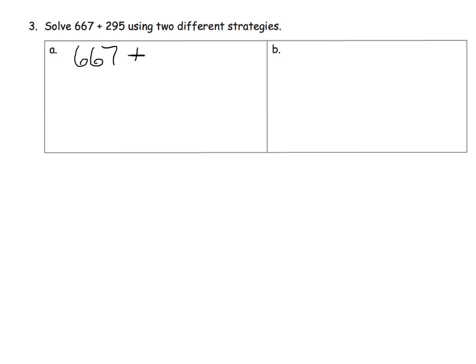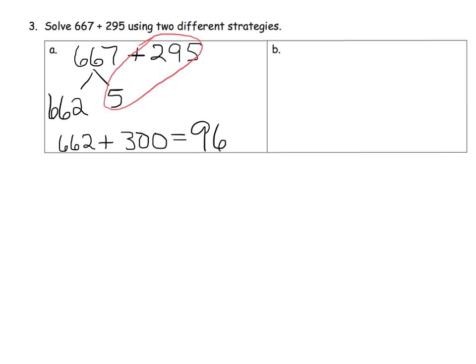So I think one way I would do this is I think I would use the number bond because I would say, hmm, this guy is really close to a landmark number. It's really close to 300. It just needs five more. So I'm going to use a number bond and I'm going to decompose 667 into 662 plus 5. And now these guys can add together to equal 300. So we now end up with 662 plus 300 and that equals 962.